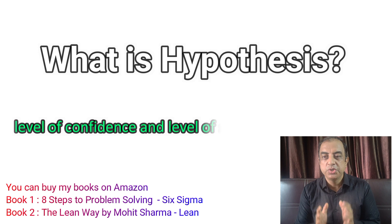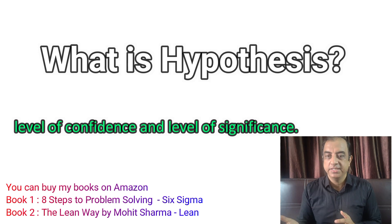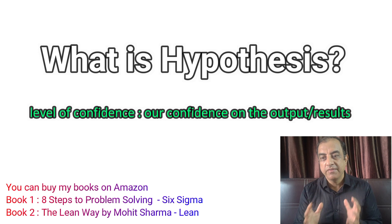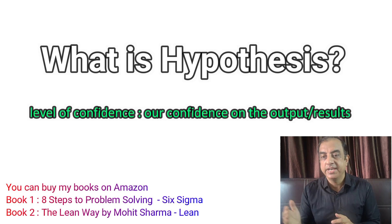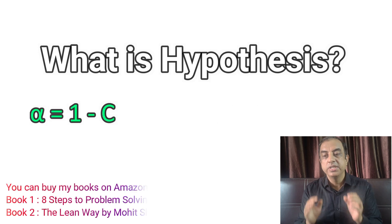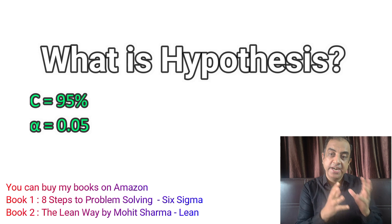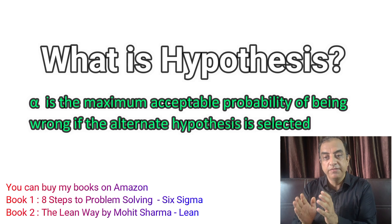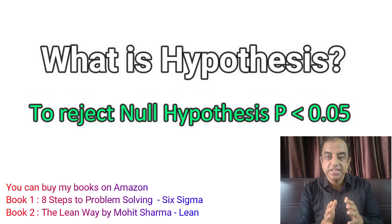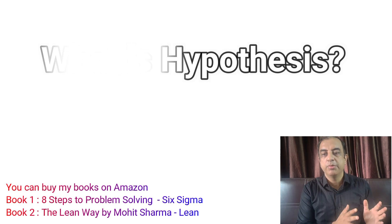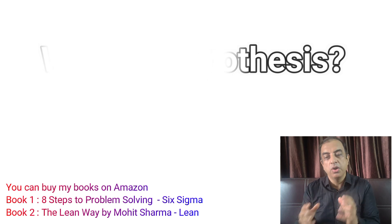Before we do hypothesis tests we should learn a few terms: level of confidence and level of significance. Level of confidence means how confident we are that the results we are showing are correct — it should be high, like 95% or 99%, and is denoted by the letter C. The level of significance is denoted by alpha and its value is 1 minus C. If confidence is 95%, then alpha is 0.05. Alpha is the maximum acceptable probability of being wrong if the alternate hypothesis is selected. When we reject the null hypothesis, the p-value should be less than 0.05.